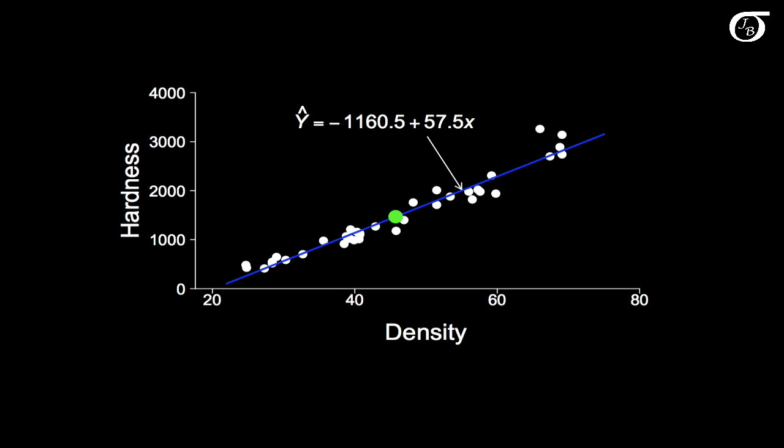Here's our wood data once again. And this green point that I've plotted in is simply the point mean of X and mean of Y. The regression line always passes through that point.